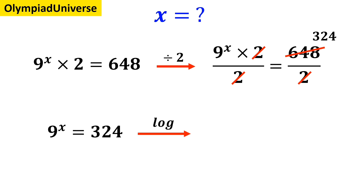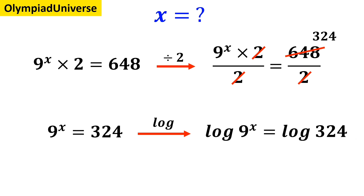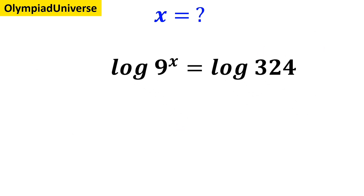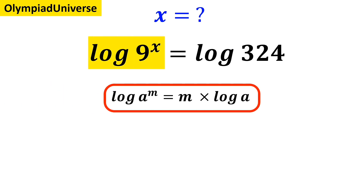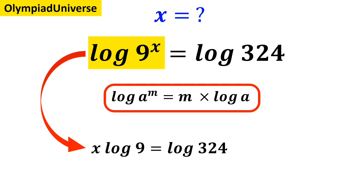Now we take the logarithm of both sides of the equation, which becomes log of 9 to the power of x equals log of 324. According to the rules of logarithm, log of a to the power of m is equal to m times log of a. So we can write the expression highlighted in yellow as follows: x times log of 9 equals log of 324.